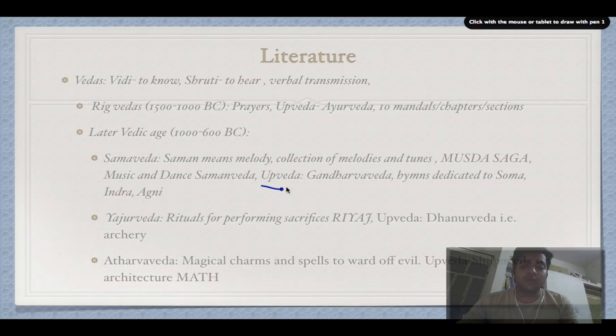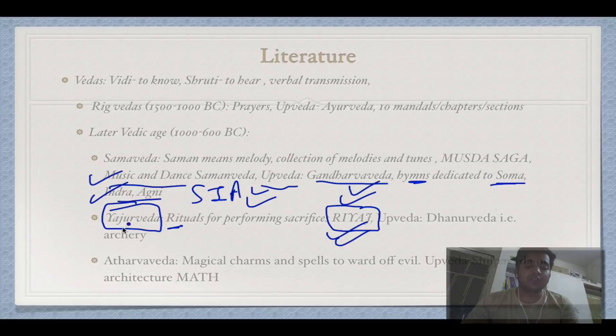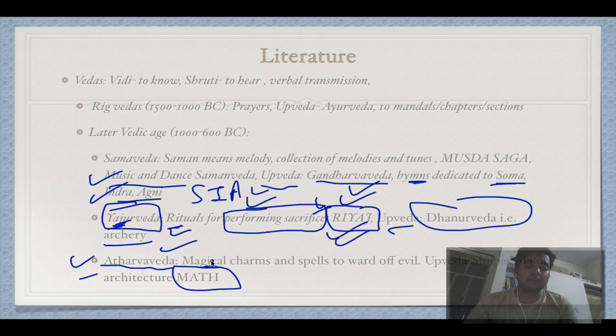Hymns in the Samveda are dedicated to Som, Indra, and Agni. For the Yajurveda, remember 'Riyas' — rituals — as it deals with rituals for performing sacrifice. Its Upveda is Dhanurveda, related to archery. Atharvaveda — just remember 'math' — is related to magical charms and spells to ward off evil. Its Upveda is Shilpa Veda, meaning architecture in Hindi.